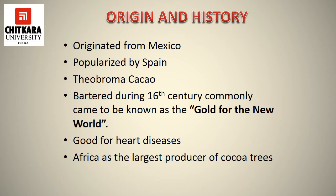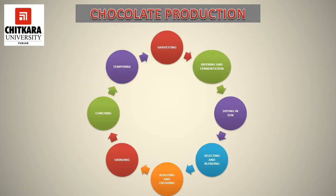The origin of chocolate, as stated by various resources, says that it originated from Mexico and then got popularized by Spain and various other countries. It is obtained from the Theobroma cocoa tree. It was bartered during the 16th century and commonly came to be known as the gold of the new world. Chocolate is good for heart diseases, and Africa is the largest producer of cocoa trees.